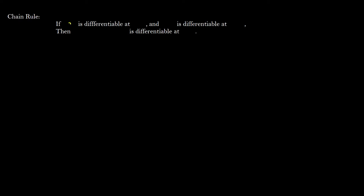Today we're going to be taking a look at the chain rule. First I'm going to explain what it is in mathematical terms, then I'll give an example, and I'll explain what it is more informally. The chain rule states that if a function g is differentiable at a point x, and another function f is differentiable at g of x, then the composite function f of g of x is also differentiable at a point a.